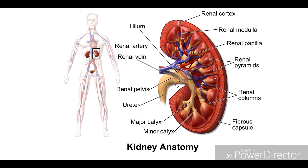There are 7 to 13 pyramids, each opening into minor calices. Minor calices open into major calices, and 2 to 3 major calices are present in the human body. The right kidney is positioned slightly lower than the left kidney due to the presence of the liver above it.